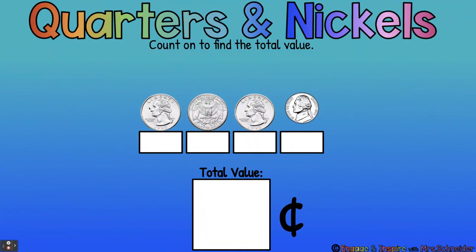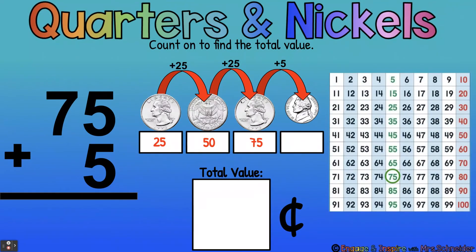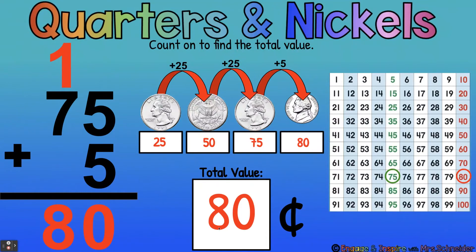Let's find the total value here. Count our quarters first. One quarter is 25, two quarters is 50, three quarters is 75. Now we're going to add 5. 75 plus 5 — it's a 5 plus a 5. We know that 5 plus 5 is 10, put a 0, carry the 1, and 1 ten plus 7 tens is 8. So 75 plus 5 is 80 cents. Total value is 80 cents.